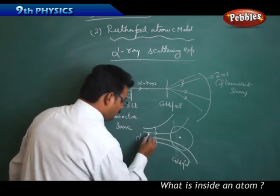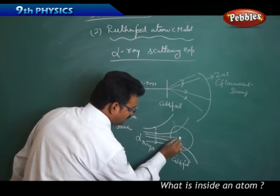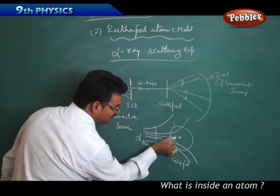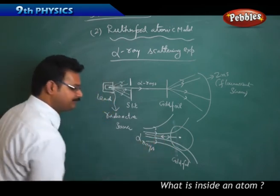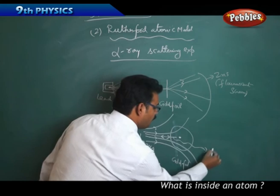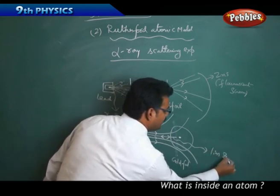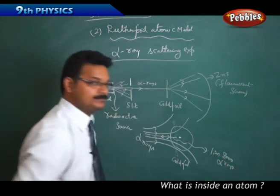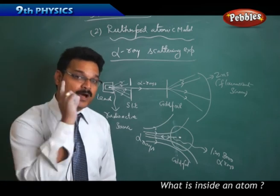But one alpha particle going straight, when reaching to this point, it's not hitting, it just goes near to this point and comes back in reverse direction. And this incident happened one in eight thousand alpha particles. When they sent eight thousand alphas, one alpha is coming backward in the straight backward direction.